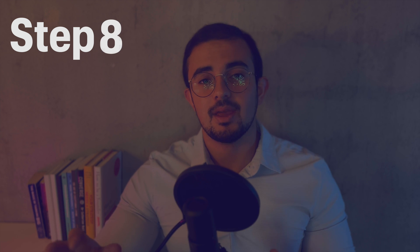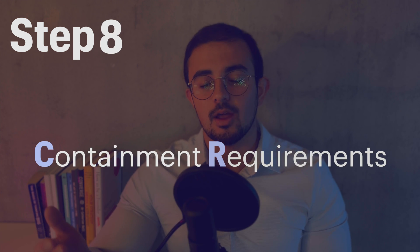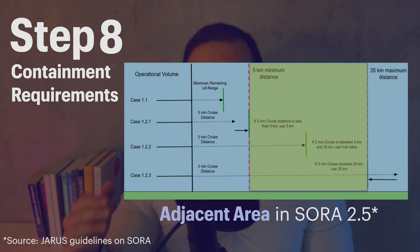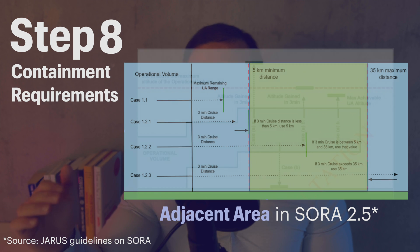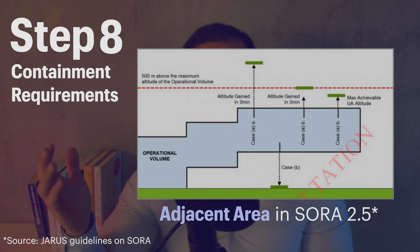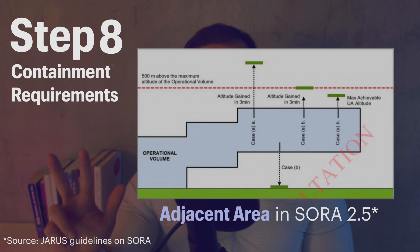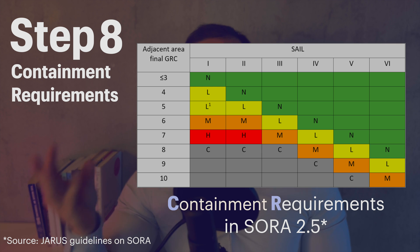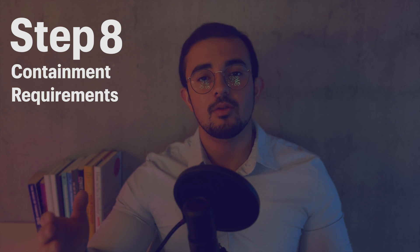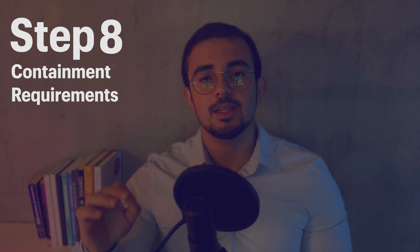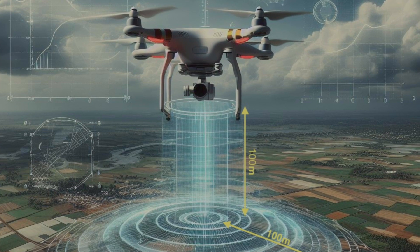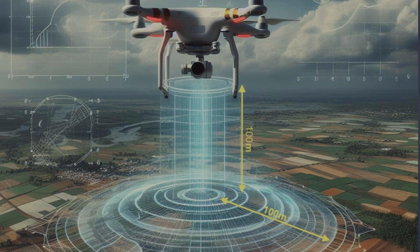You then use your SAIL score in Step 8 to identify your containment requirements. For that, you look at the ground risk class and air risk class of your adjacent area, which usually ranges between 5 and 25 kilometers horizontally and 500 meters or more vertically, depending on how far your drone can fly within 3 minutes. There are 5 levels of containment: none, low, medium, high, and needing to consult with the authorities. One example of a low containment requirement is adhering to the 1-to-1 rule — if you're flying at 100 meters altitude, you need a ground buffer of at least 100 meters.